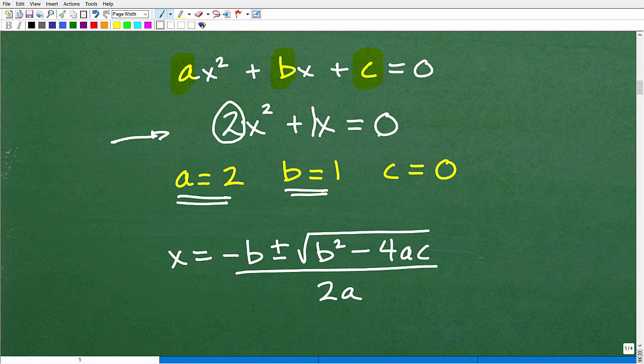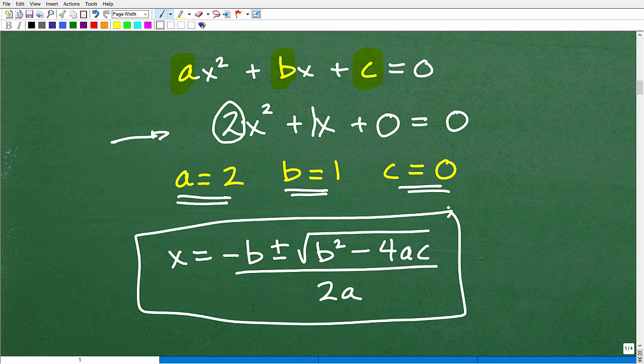but some of you might be saying, well, there's no C here. Well, really, there is, this is just plus zero. When you don't see a number here, it's a zero, okay? So plus zero is still the same thing as 2x² + x + 0, okay? That's our C, so C is equal to zero, okay? So I have my A, B, C values, now I can plug everything into the quadratic formula and solve.